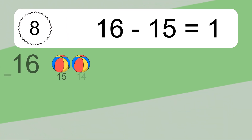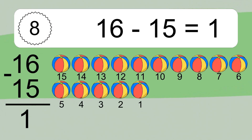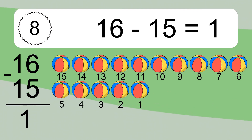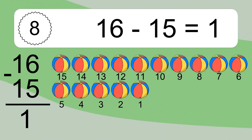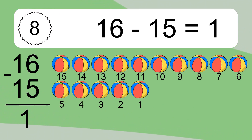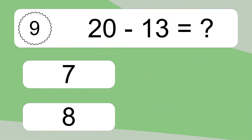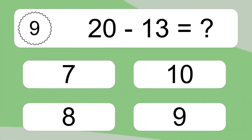16 minus 15 equals what? 16 minus 15 equals 1. Let's count it: 15, 14, 13, 12, 11, 10, 9, 8, 7, 6, 5, 4, 3, 2, 1.